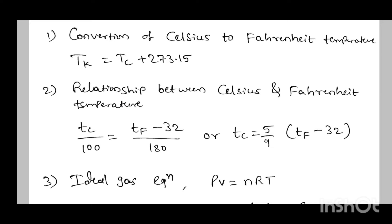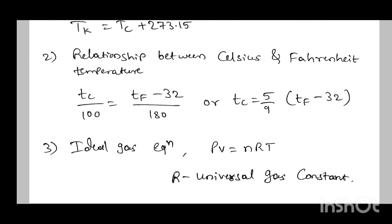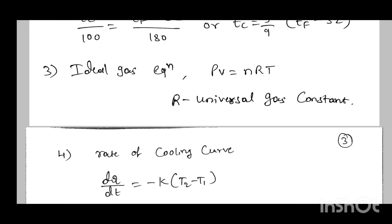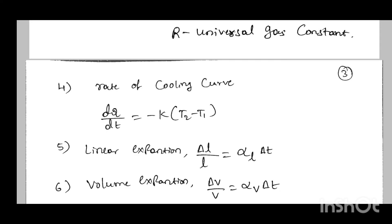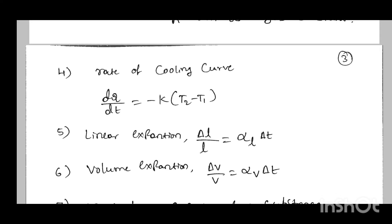Here T_C is temperature in Celsius and T_F is temperature in Fahrenheit. Simplifying gives T_C equal to 5 by 9 into bracket T_F minus 32. You can also express the formula in terms of T_F. Next, the ideal gas equation: PV equal to nRT, where R is the universal gas constant. Next, Newton's cooling rate of cooling: dQ by dt equal to minus k into bracket T2 minus T1.